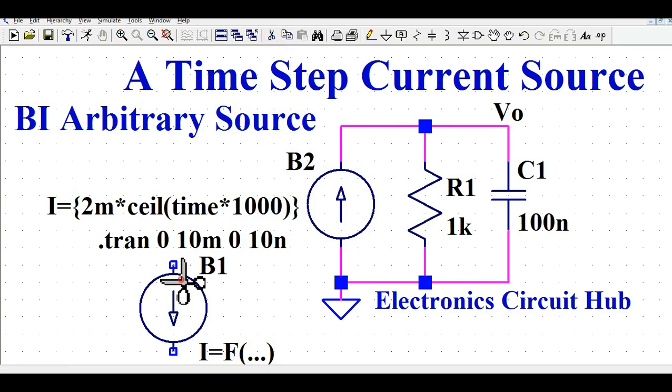So I have taken the same here and I've connected here, and now I have defined I equals to function of fx. So you can see here 2m into ceil function, ceil into parenthesis time into 1000. So what happens is this circuit basically generates 2 milliampere current every after 1 millisecond.